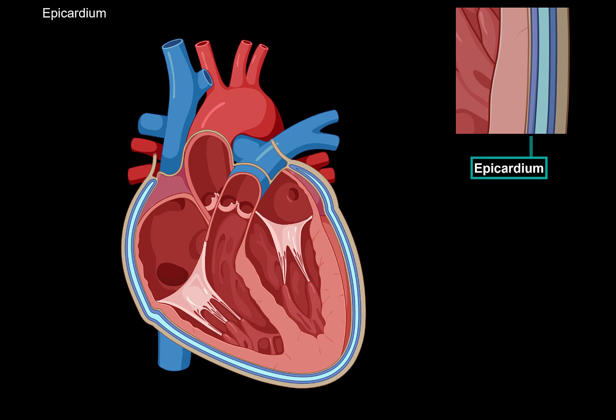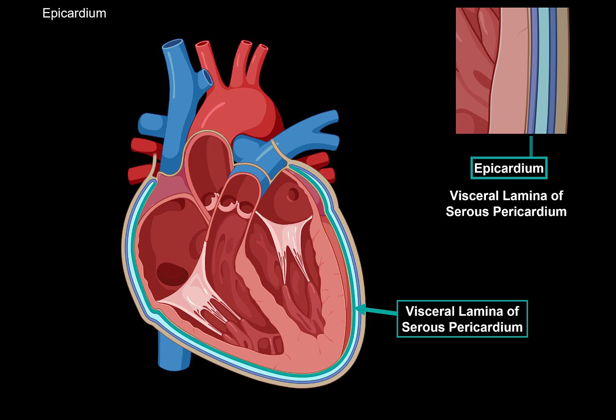The third layer of the heart is called the epicardium. The epicardium is special because it's not strictly part of the heart itself, but since it sits so tightly against the myocardium, it's considered part of the heart layers. The epicardium is actually the visceral layer of the serous pericardium. The visceral lamina is connected to the parietal lamina of the serous pericardium, and they connect at the backside of the heart where the great vessels are.